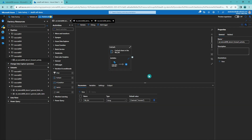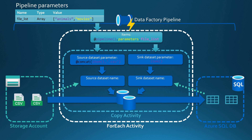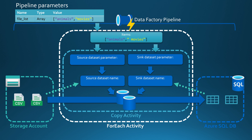Let's go back to the presentation to see what will happen when we run this pipeline. When pipeline execution begins, we pass down our pipeline-level parameters to the ForEach activity as items. In the first iteration we process the animals file — the source dataset parameter becomes animals.csv and the sink dataset parameter becomes animals — and the pipeline copies animals.csv from storage to the animals table in Azure SQL database. After the first iteration completes, the second iteration copies movies.csv to the movies table. These executions could happen in parallel depending on the ForEach activity settings. After the second copy is done, we are done with our ForEach activity.